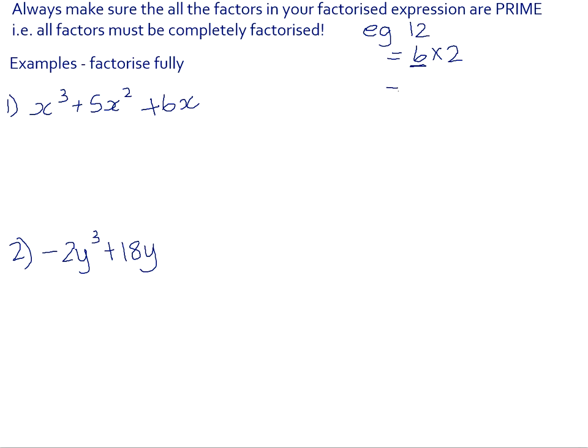6 has got factors of its own. So you can actually write 12 as 3 times 2, which gives you the 6, times another 2, which gives you the 12. So just make very sure that all of your factors are fully factorised before you finish a sum.